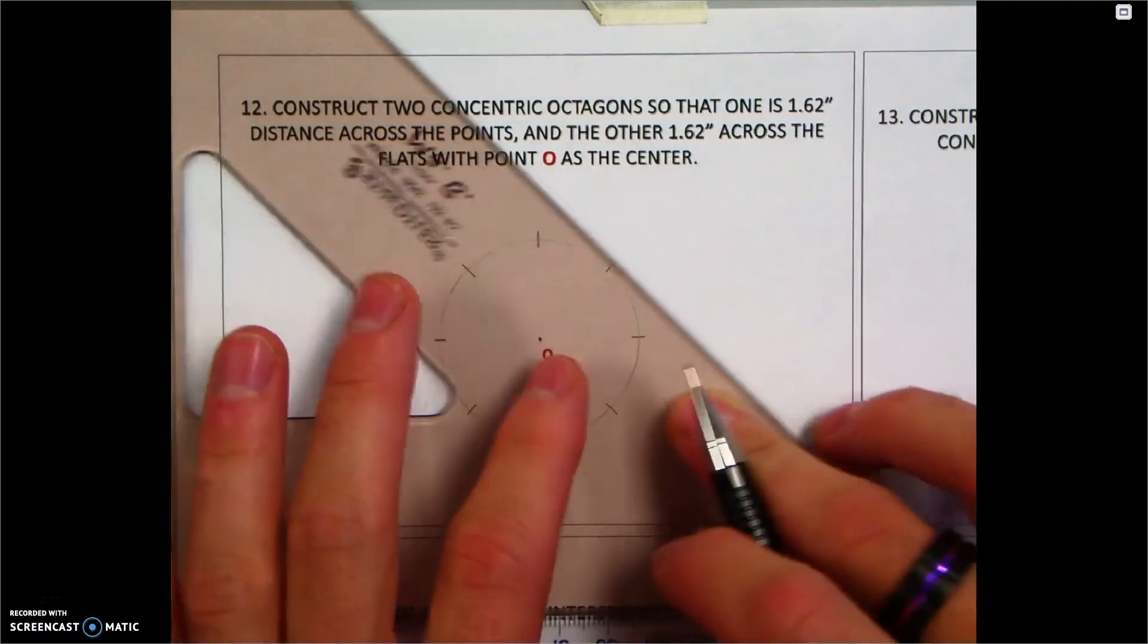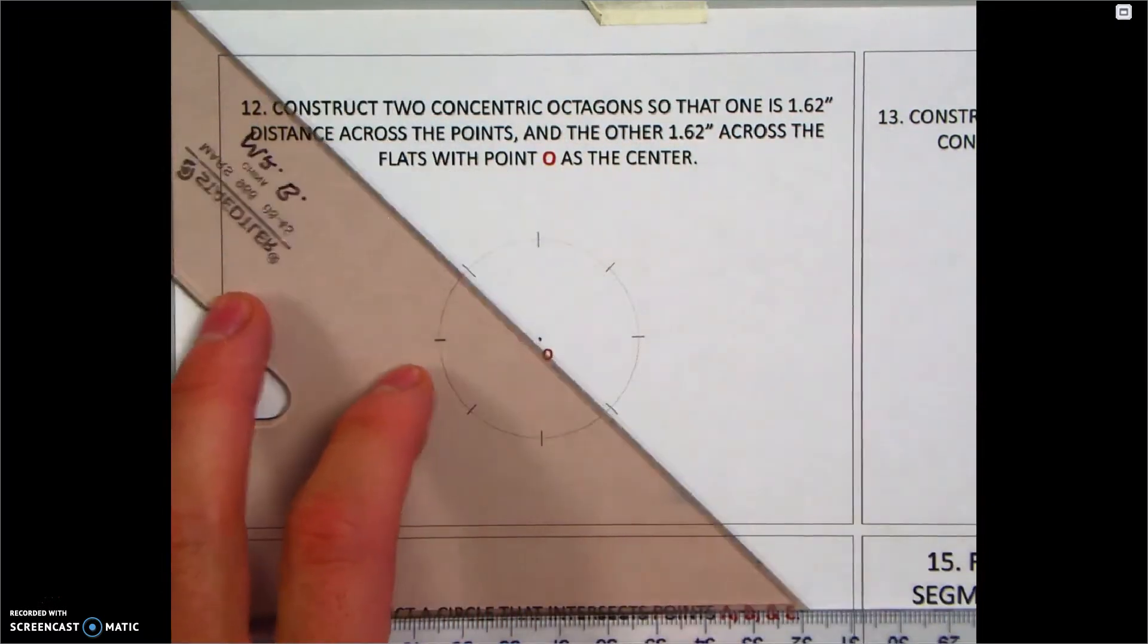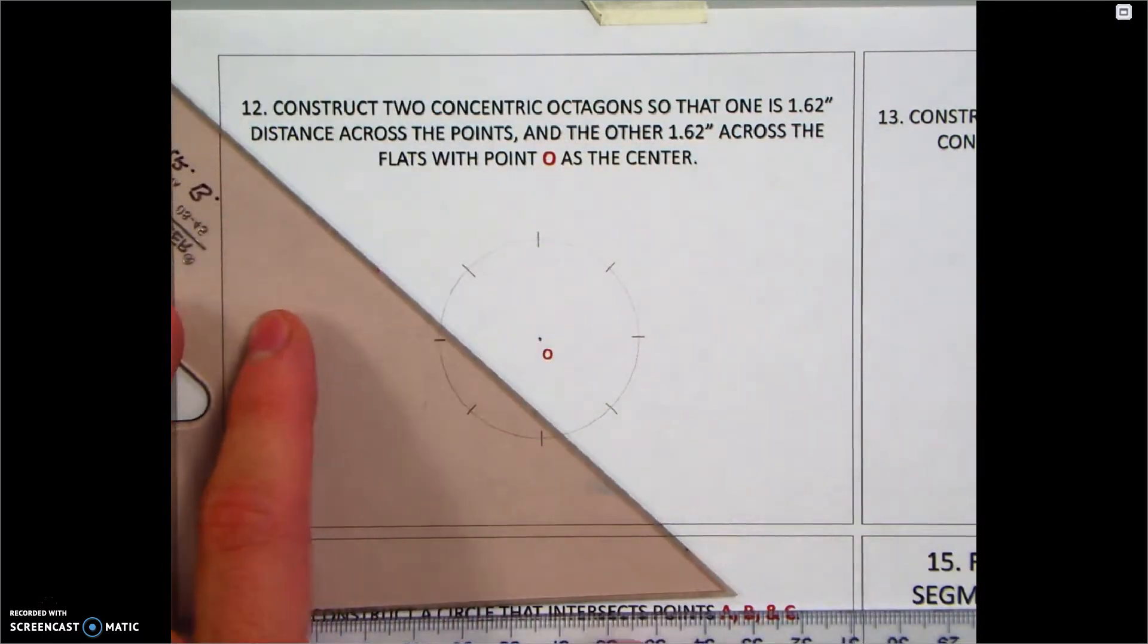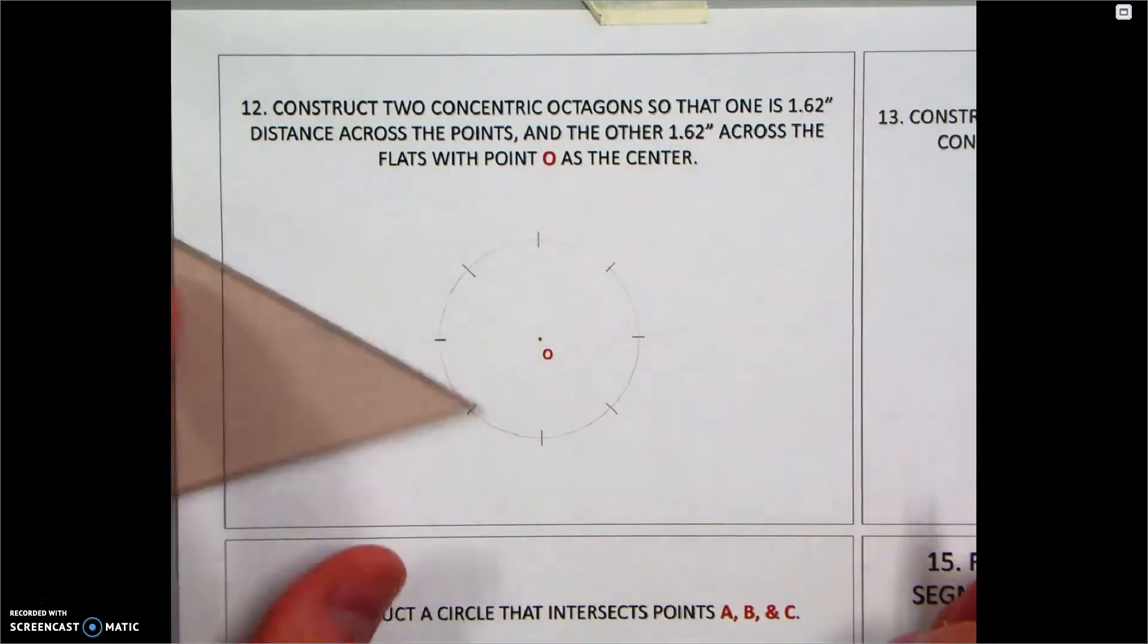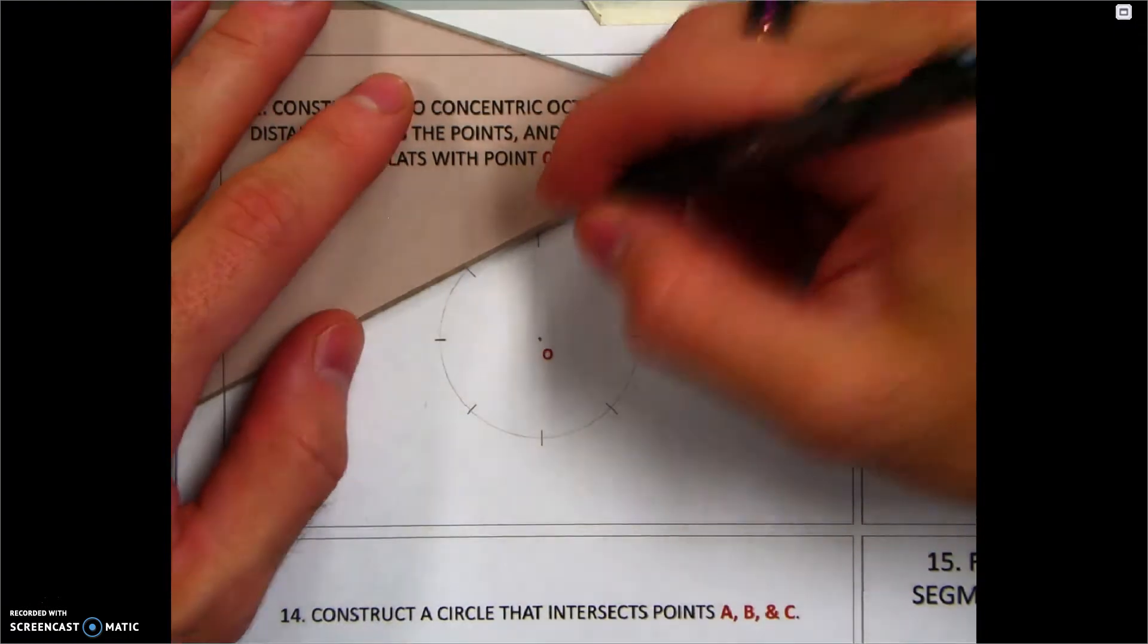Now it's a matter of connecting the dots. So in order to draw our inscribed octagon, I just have to connect all of the individual points that we just created.